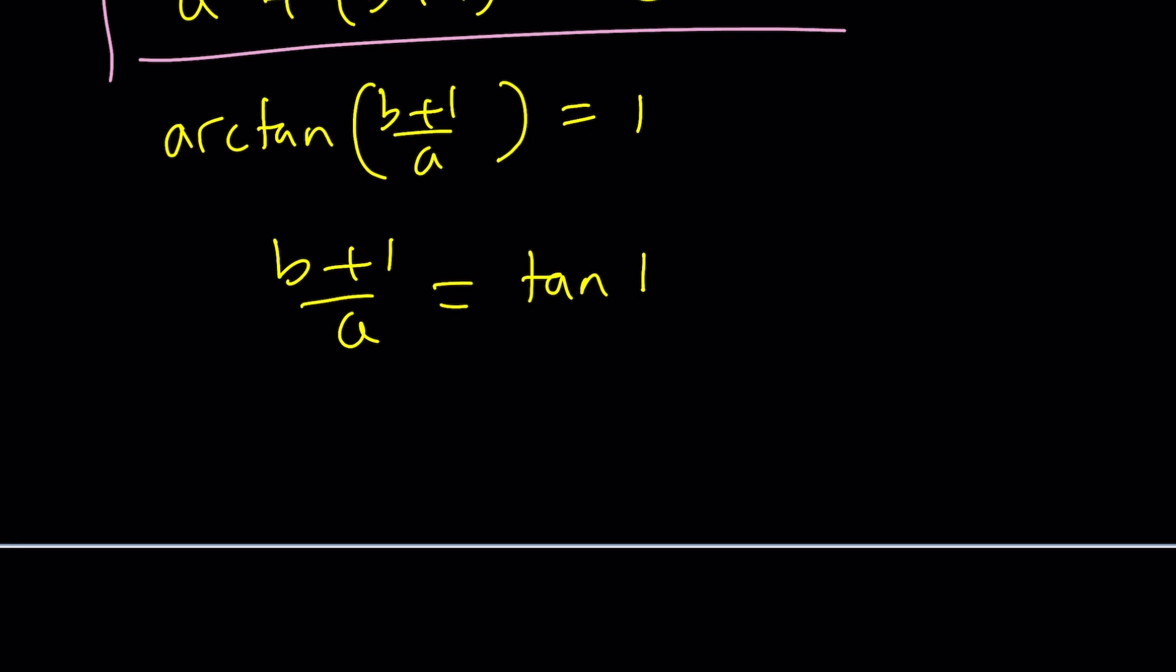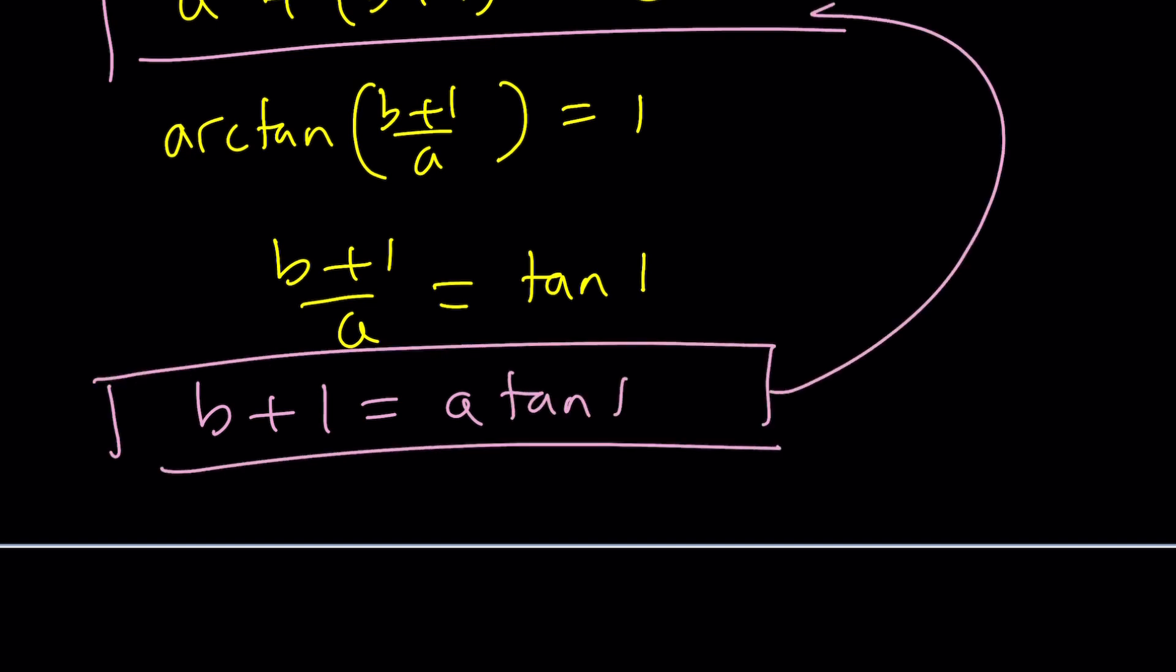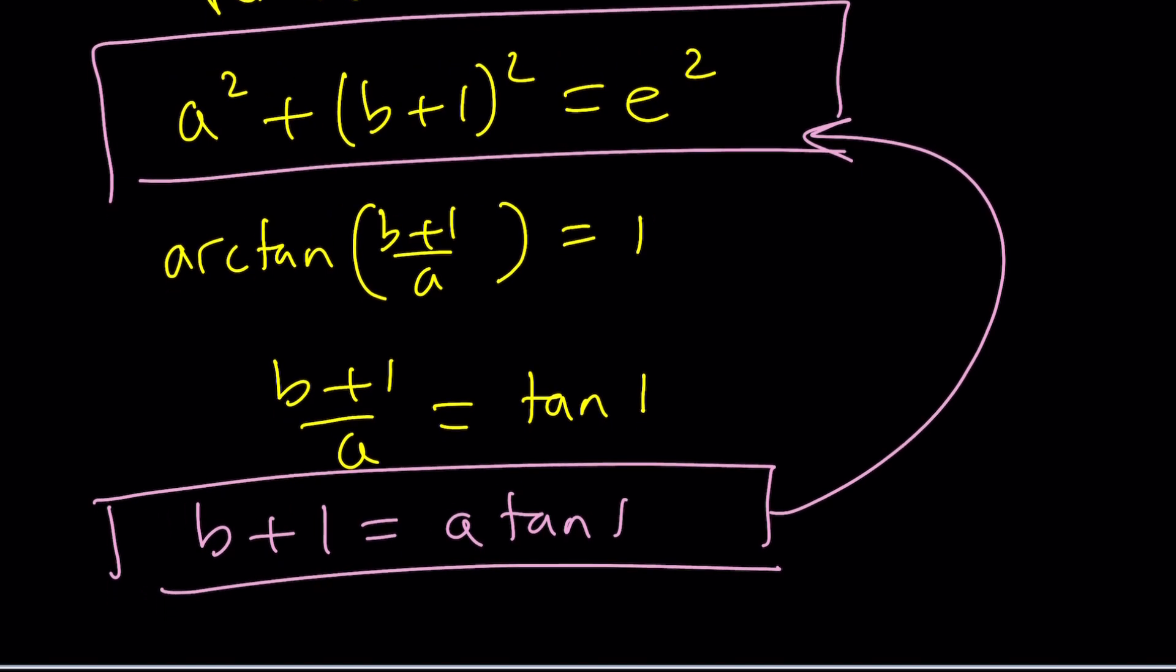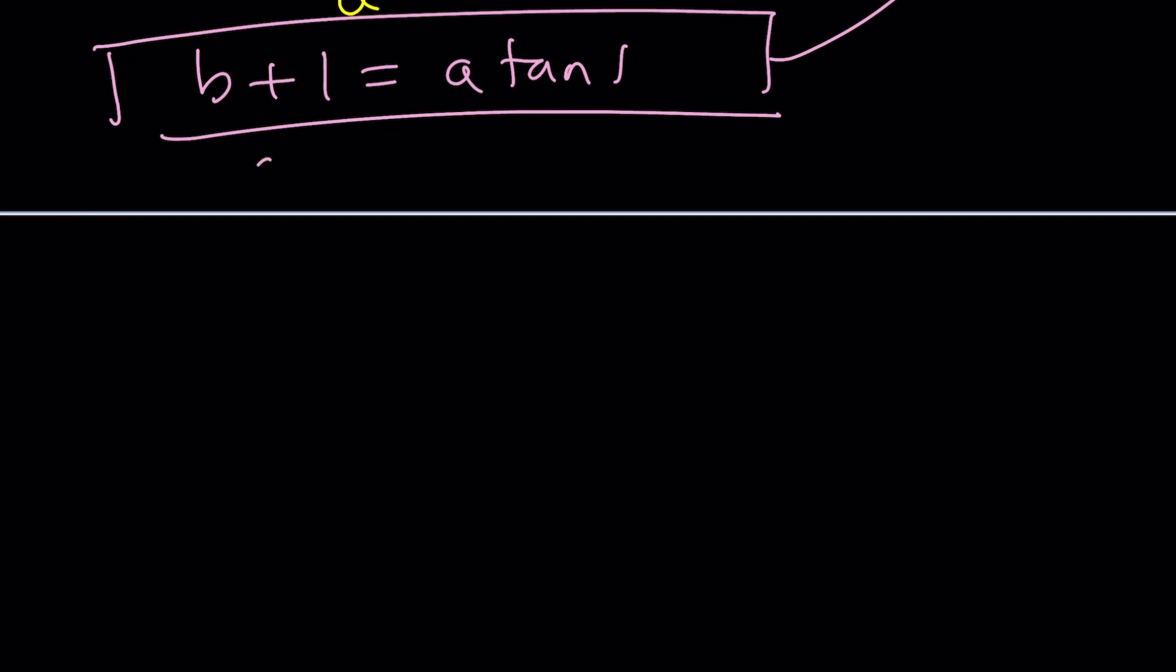So now, what do you do? Well, we could probably cross-multiply. And then guess what? This equation will be along with this equation. I see b plus 1. Let's replace b plus 1. So now I have this. I'm going to replace b plus 1 with a tan 1. Isn't that nice? This is what makes this problem fun, because it's easily solvable.